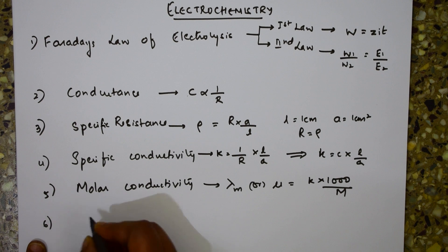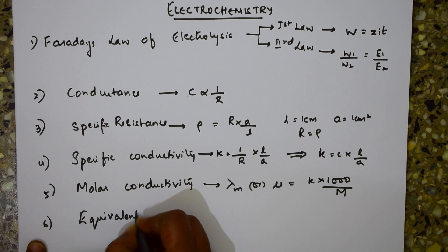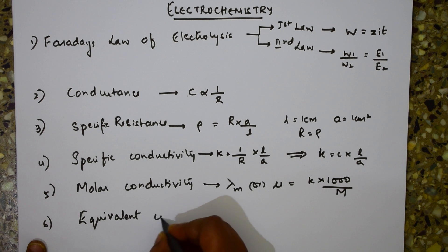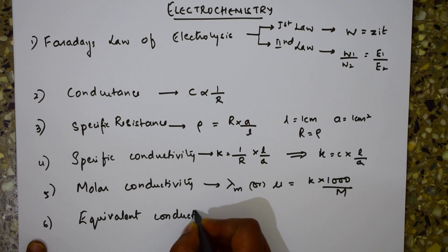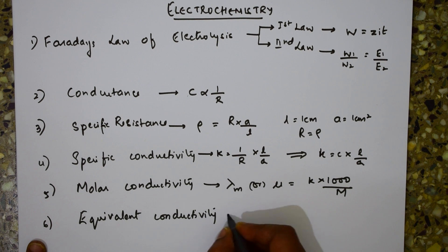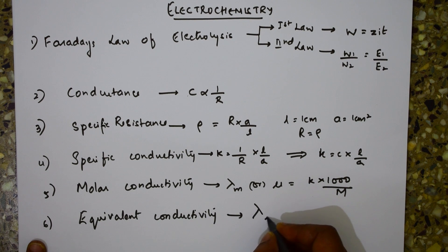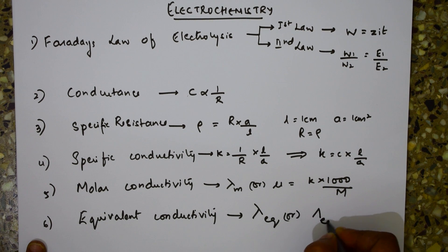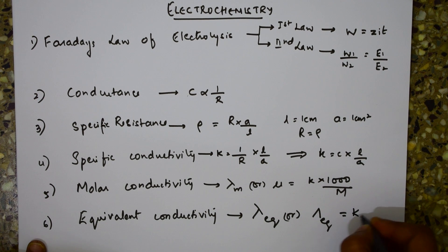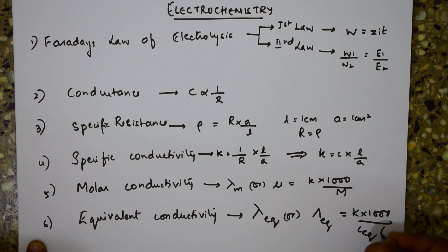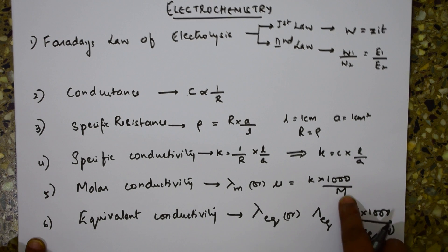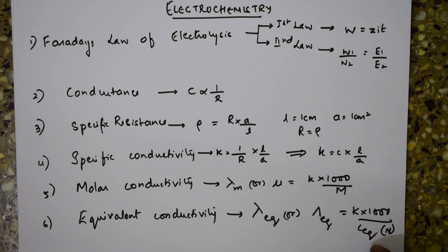Next is equivalent conductivity, denoted by λ_eq, which equals κ × 1000 / C_equivalent, where C_equivalent is the normality. Note the difference: for molar conductivity it is molarity, and for equivalent conductivity it is normality.